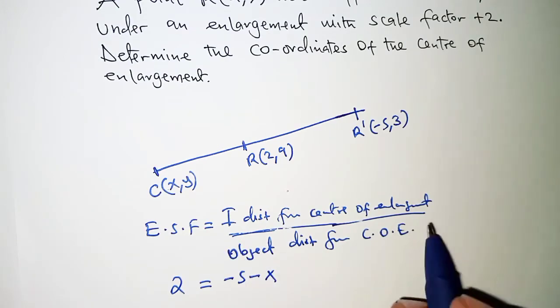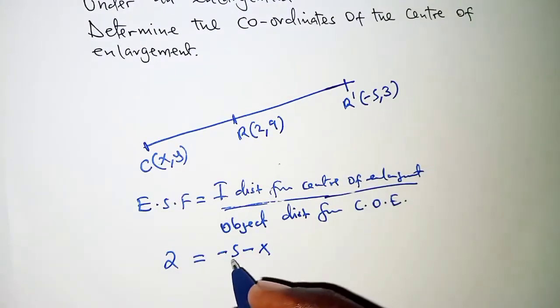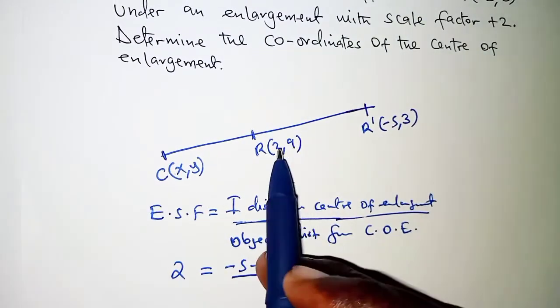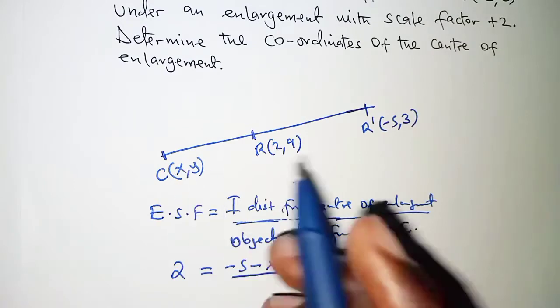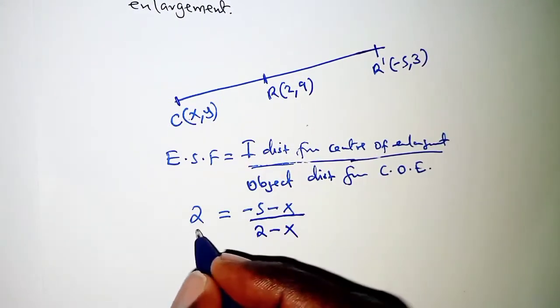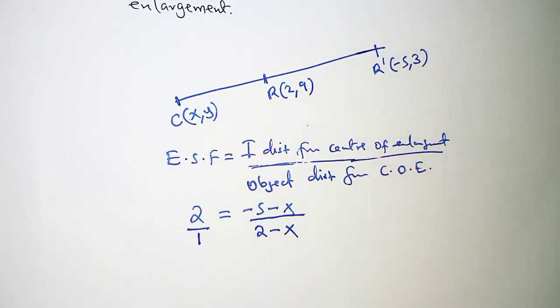That is the displacement there, all over the object distance again for the X coordinate, 2 minus X. For the sake of cross multiplication we can have this over 1 and then we cross multiply. When we cross multiply we'll have 4 minus 2x is equal to -5 minus x.